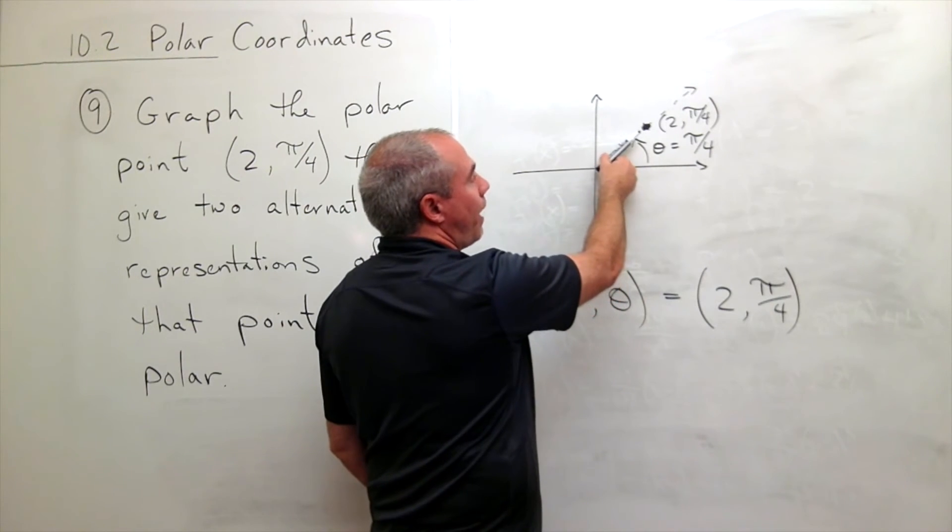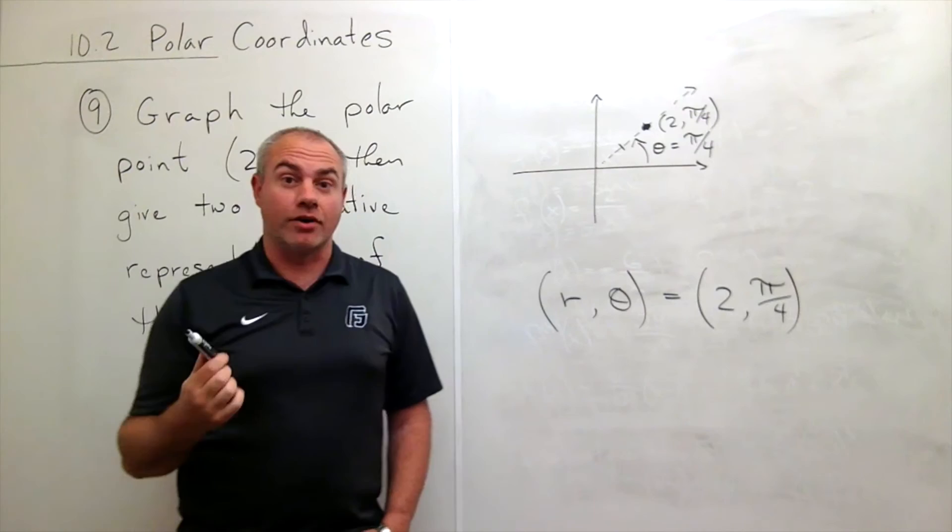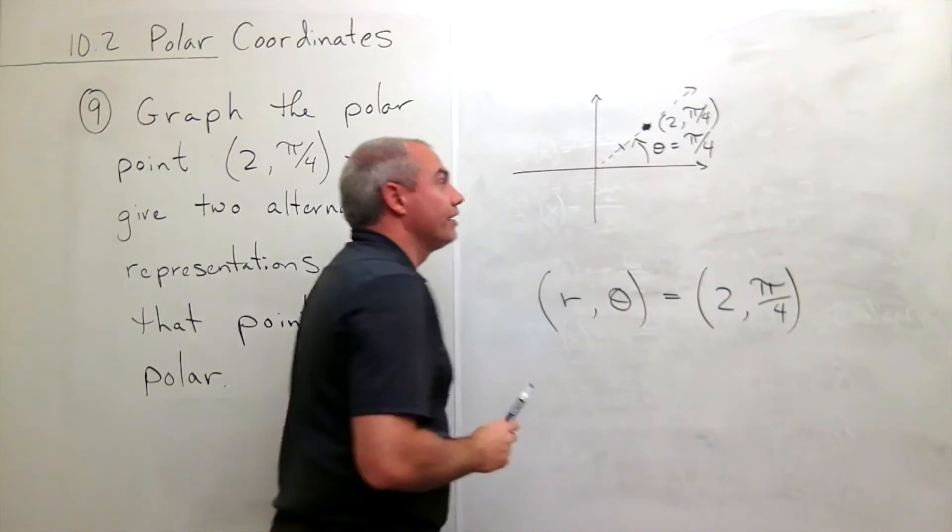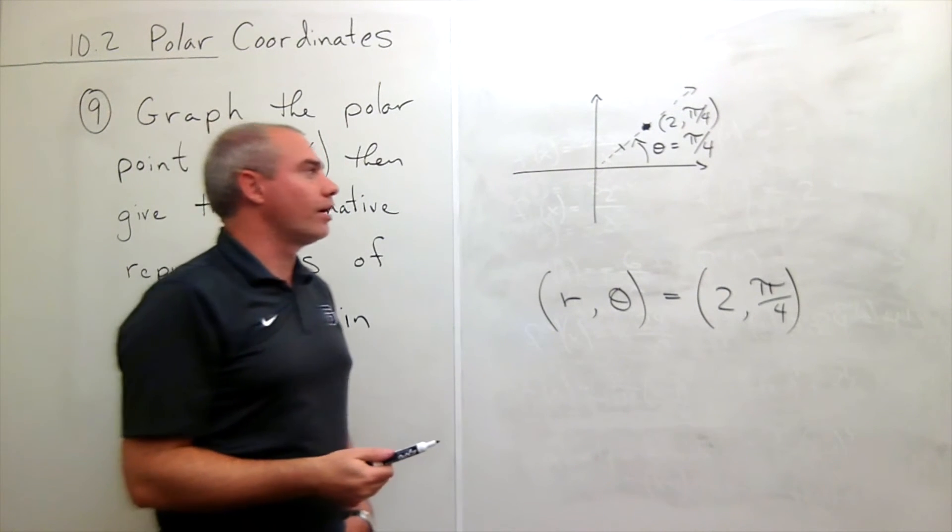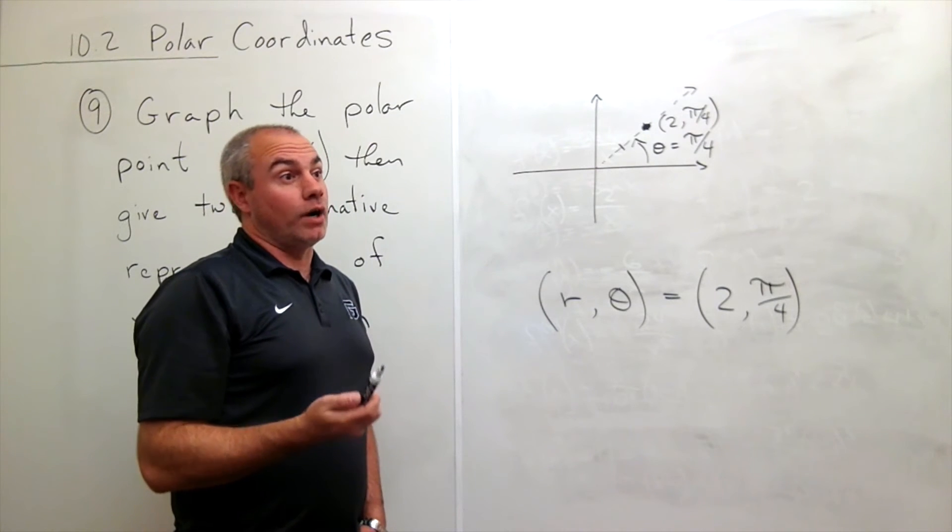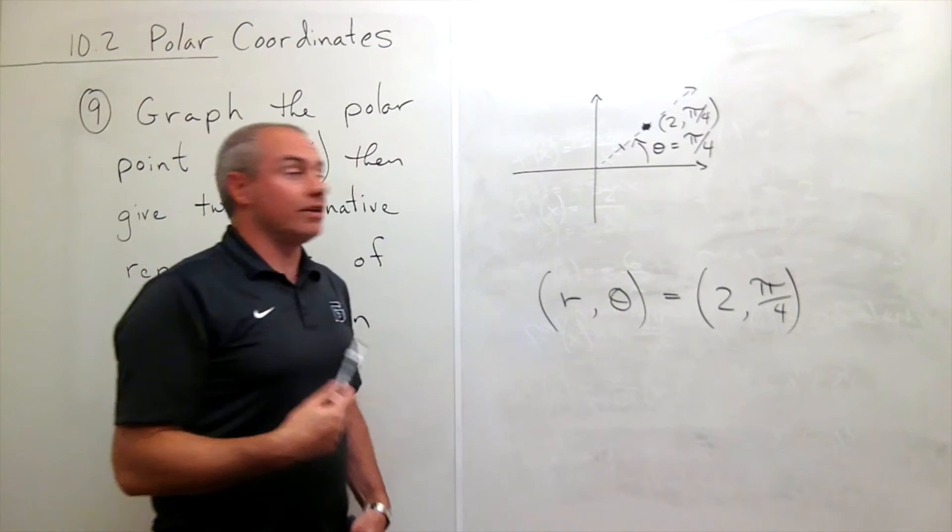So the angle π/4 is not a unique way to write that angle. If I went around another 2π, so in other words 2π plus an additional π/4, what would that be? That would be 9π/4. So that's the same angle as π/4.